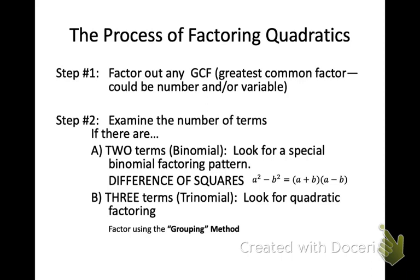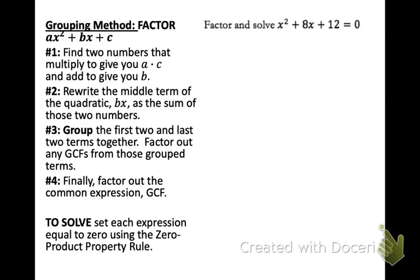Let's look through the process of factoring. Every time you want to think through this process, the first thing you're going to look for is a greatest common factor — it can be a combination of numbers and/or variables. Then examine the number of terms, because that tells you the direction to go. If there are two terms, look for the difference of squares. If there are three terms, try the factoring method we're learning in this concept, called quadratic factoring — specifically, the grouping method — which you can use to factor any factorable trinomial.